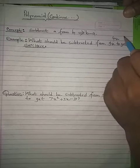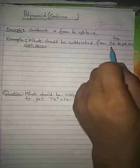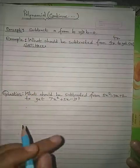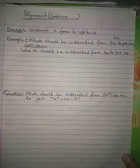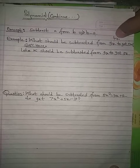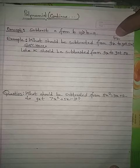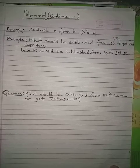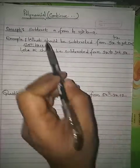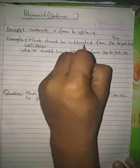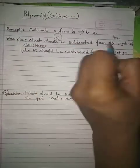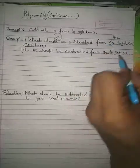If we suppose X as an apple, we can solve this algebraic problem in a similar way. The answer is already 4x. To get this formally, let K be subtracted from 9x to get 5x — 'what should be subtracted' means we suppose this unknown as K.